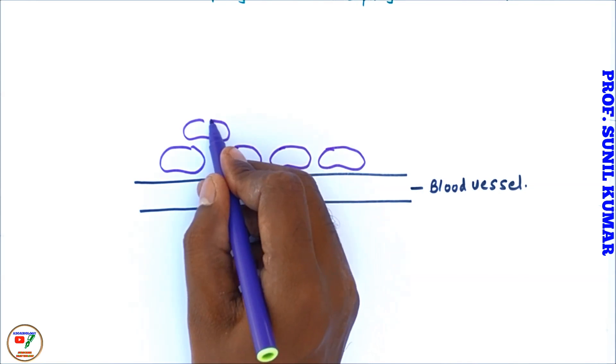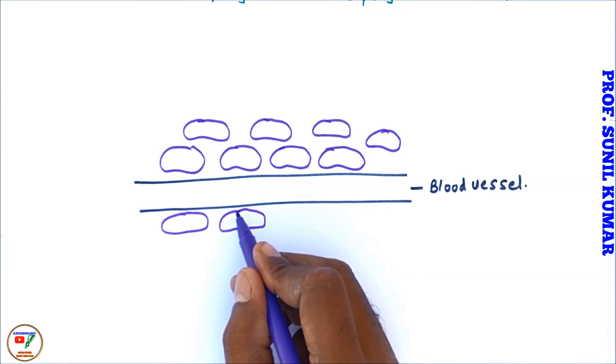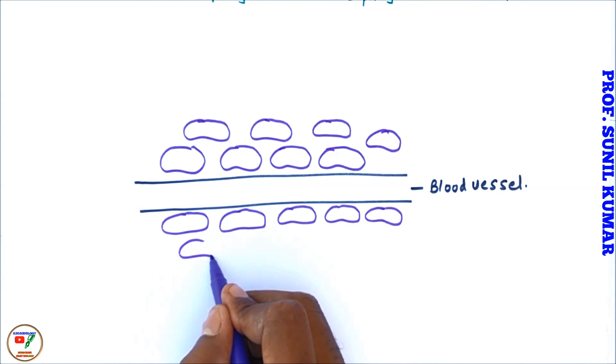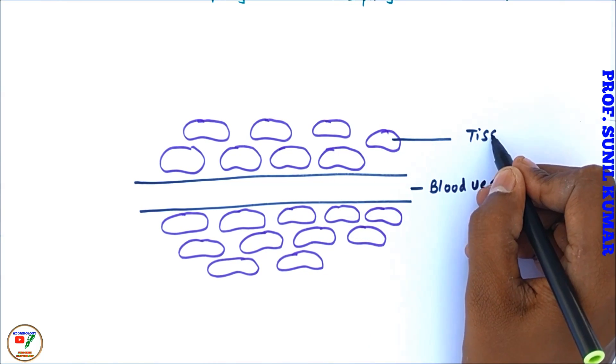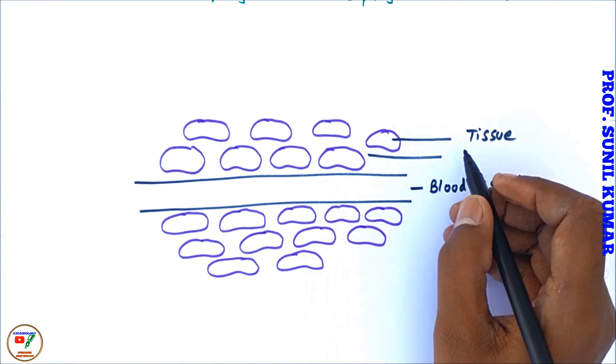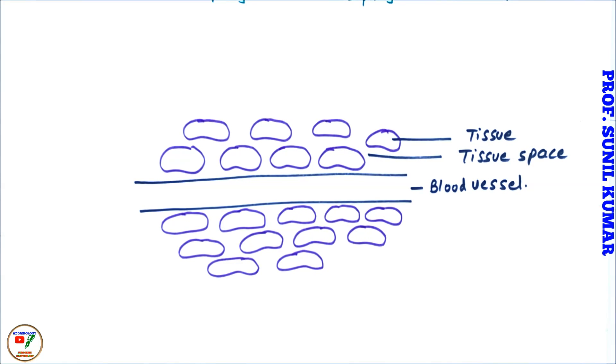Now in this blood vessel, there will be surrounding tissues that we can say. So these are all the tissues which are present around the blood vessels. Now in between these tissues we can see some space. Now this is the most important space and this space is called tissue space.